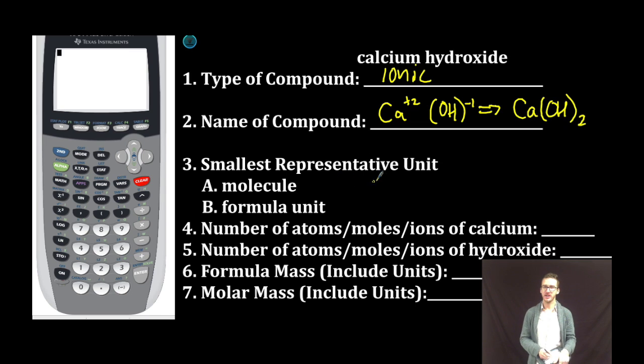Now once again, because we're working with an ionic compound, this is going to be called a formula unit, and in our formula unit we have 1 calcium ion to 2 hydroxide ions. Again, more practically, you should be thinking about those in terms of numbers of moles.